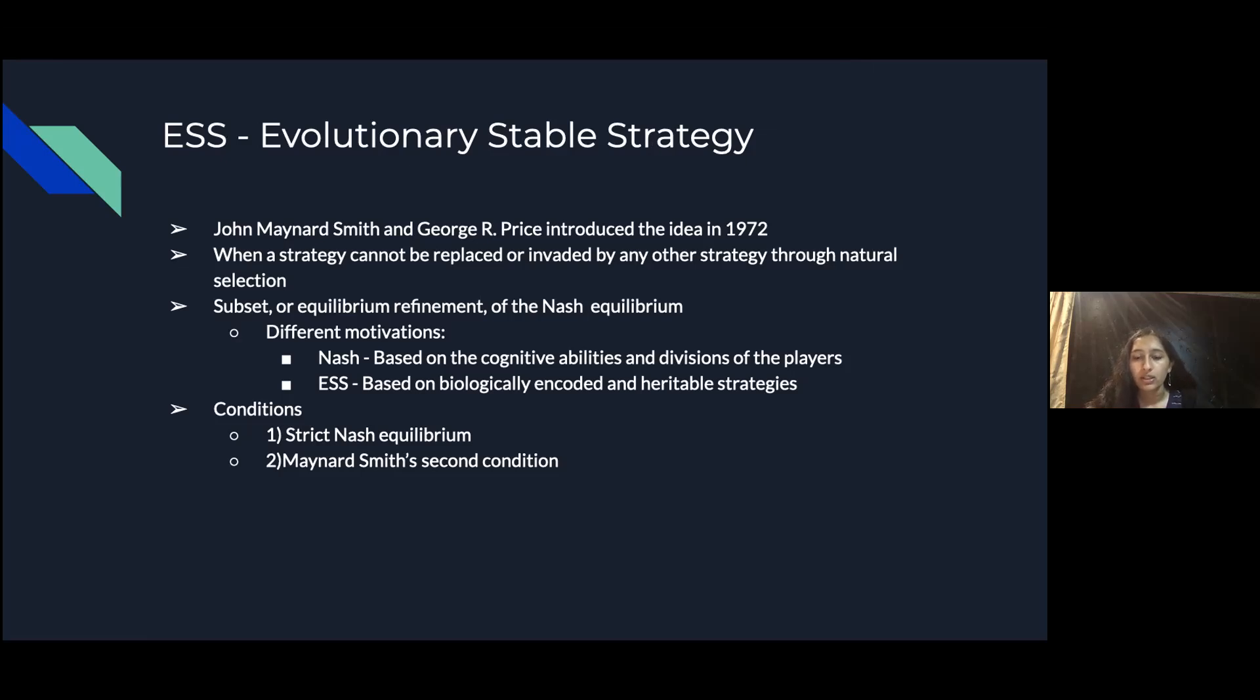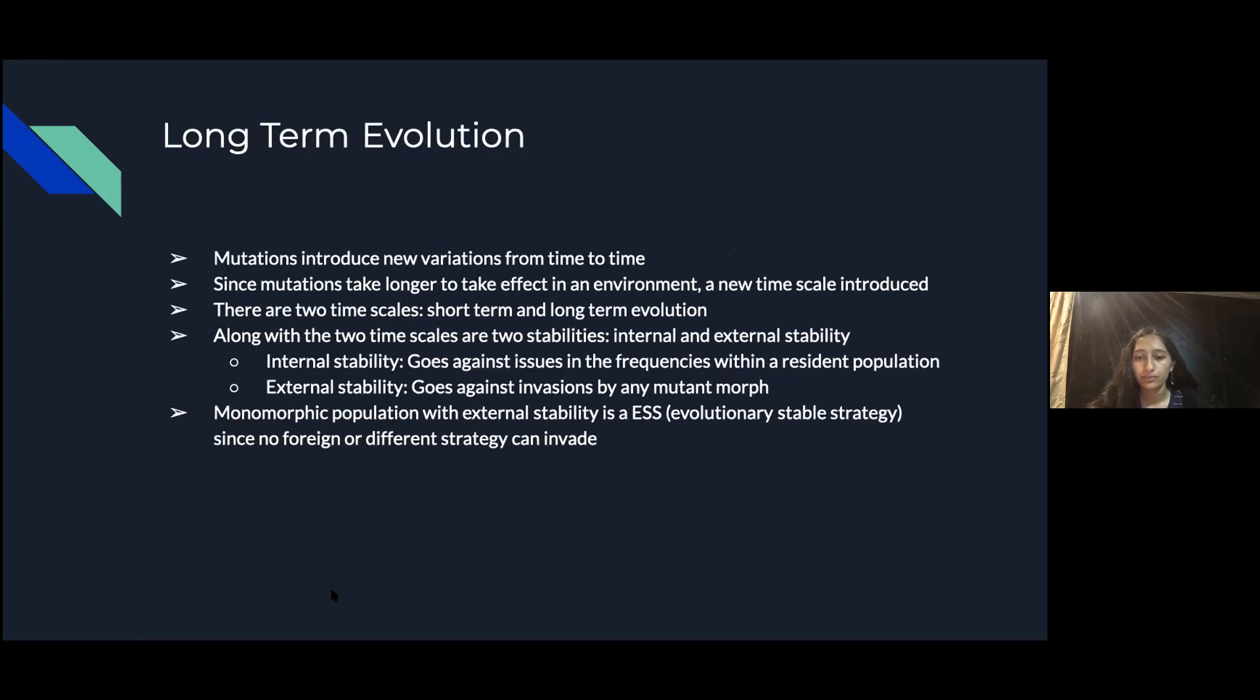There's two conditions that relate to ESS. One is the strict Nash equilibrium, and this specifies that the strategy is a Nash equilibrium, as ESS is a subset of the Nash equilibrium. And number two, the Maynard Smith second condition, and the second condition means that if strategy A is neutral with respect to the payoff against strategy B, the population of players who continue to play strategy B have an advantage when playing against A or strategy B.